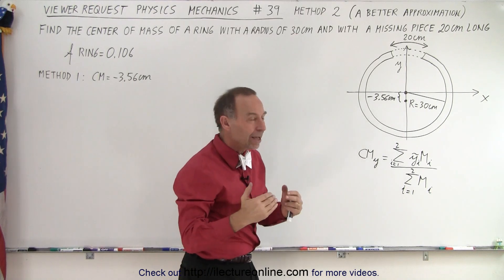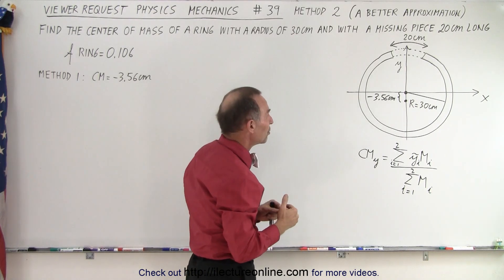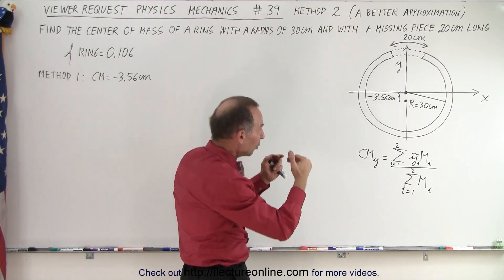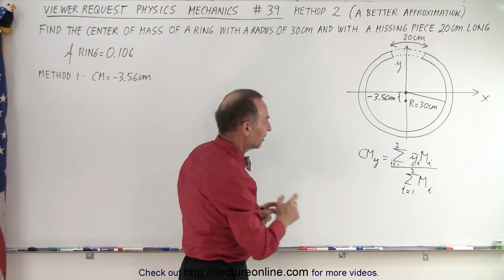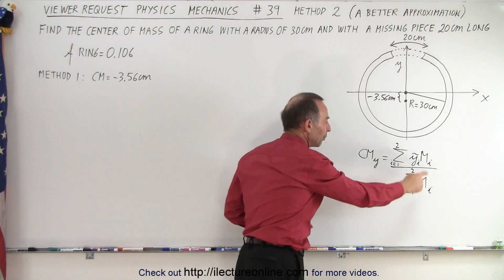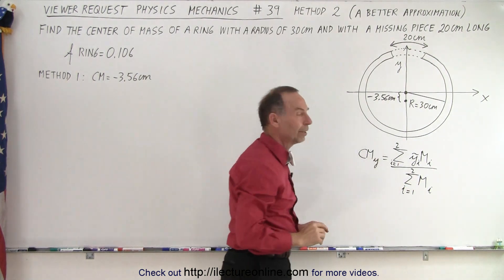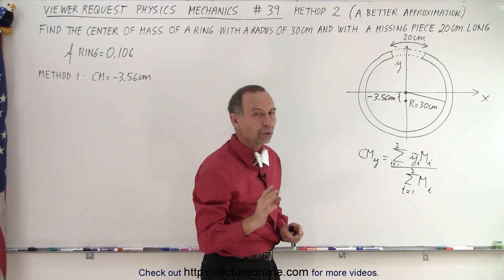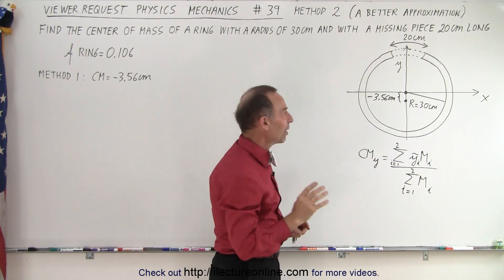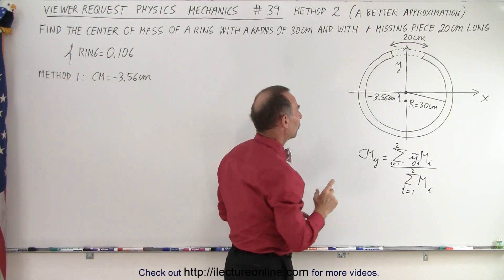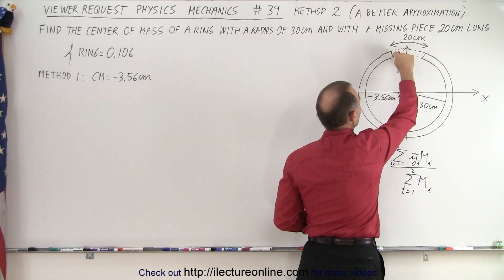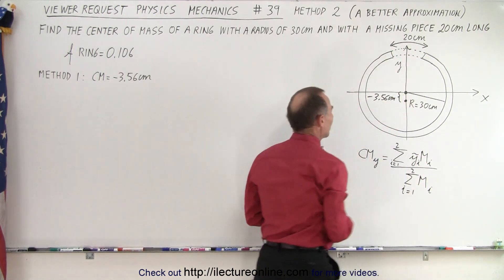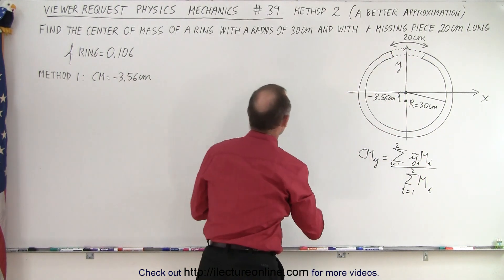Because of the approximation we used, it lowers the center of mass of that ring. This is the equation that we used, but now we're going to use a better approximation. Rather than thinking of the missing piece as being 30 centimeters away, we have to think of it differently.